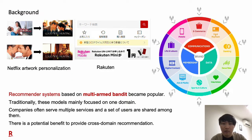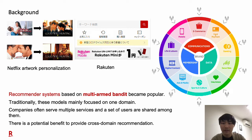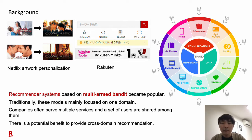Recommender systems based on multi-armed bandits have been proposed. Artwork personalization through multi-armed bandits in Netflix is a famous case. Recently, we also started to utilize this algorithm for online advertising in e-commerce markets. Traditionally, these models have mainly focused on one domain. However, companies often serve multiple services and a set of users are shared among them, so there is a potential benefit to provide cross-domain recommendation.